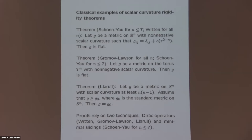Another landmark result related to the positive mass theorem is a theorem by Gromov and Lawson and then Yau, which says that if you have a metric on the n-dimensional torus with non-negative scalar curvature, then the metric g has to be flat. This is another rigidity property, but in a compact setting on the n-dimensional torus. Again there are two proofs: one uses minimal hypersurfaces due to Schoen and Yau and works up to dimension 7, and a second proof due to Gromov and Lawson which uses spinors and works in any dimension.